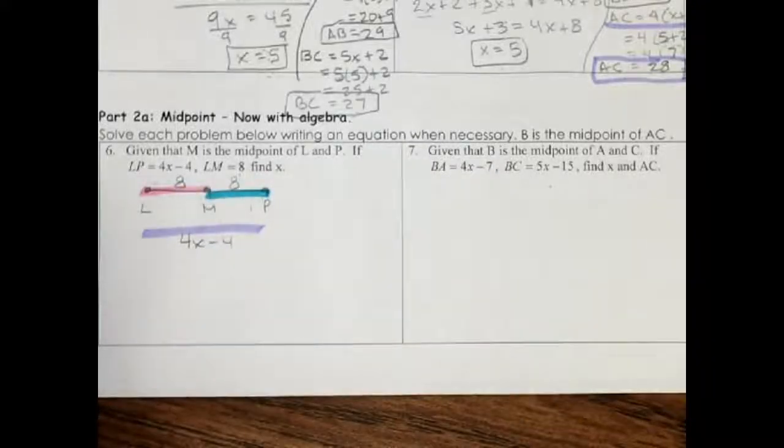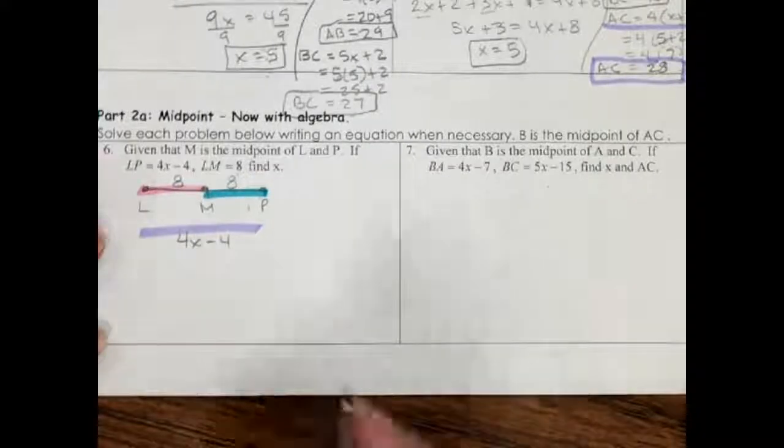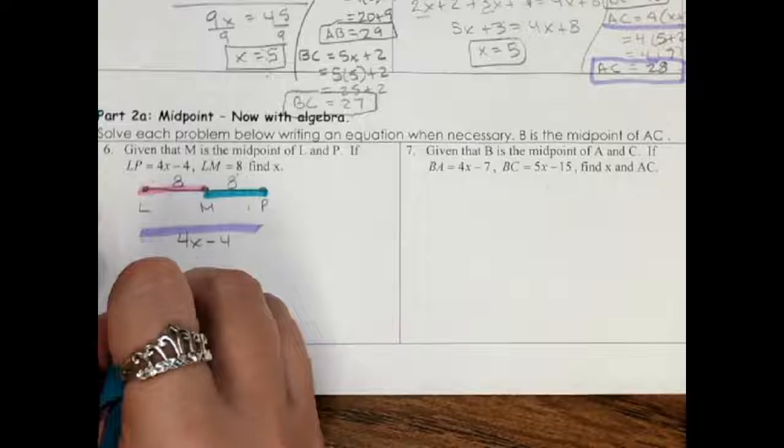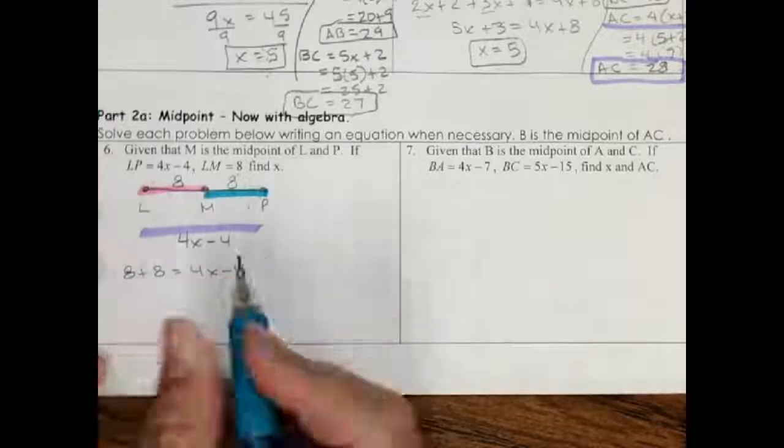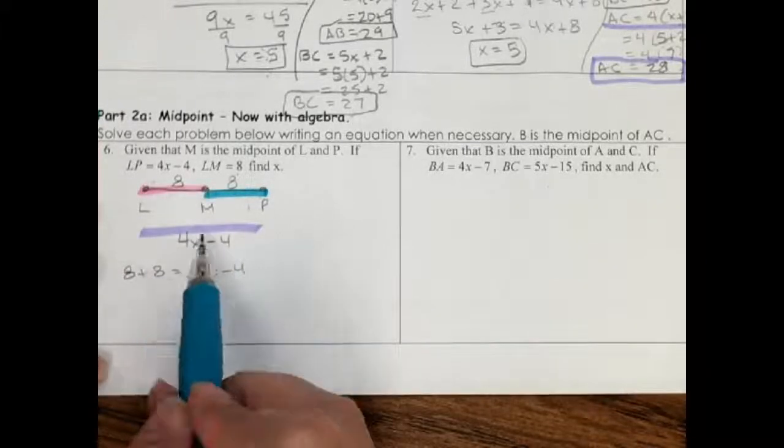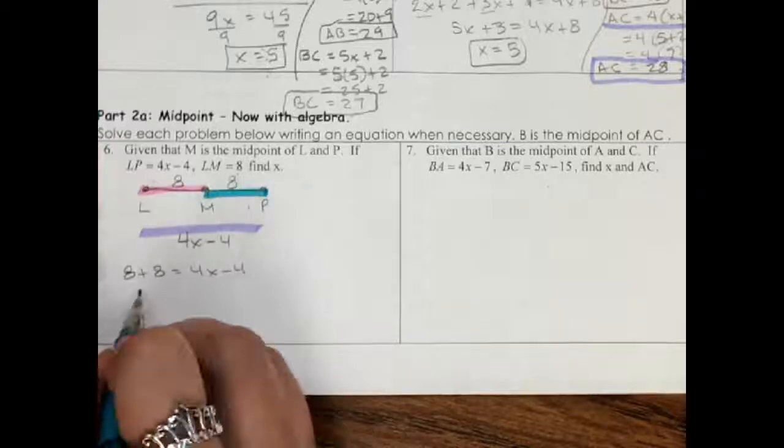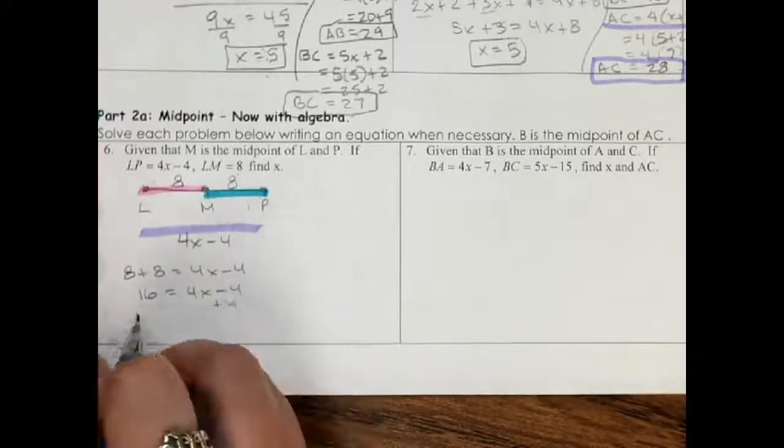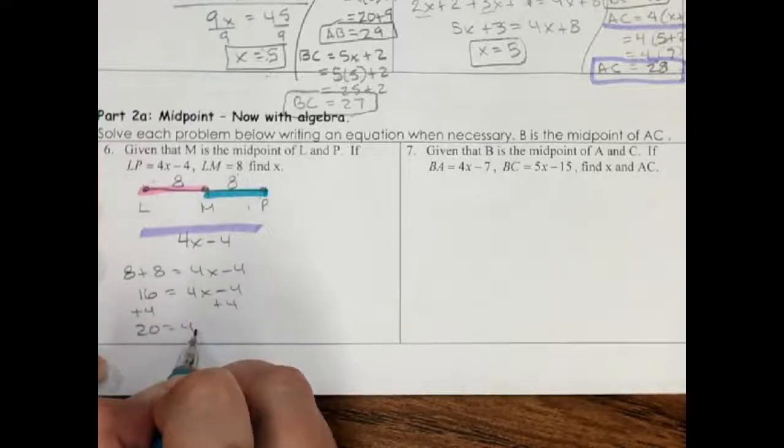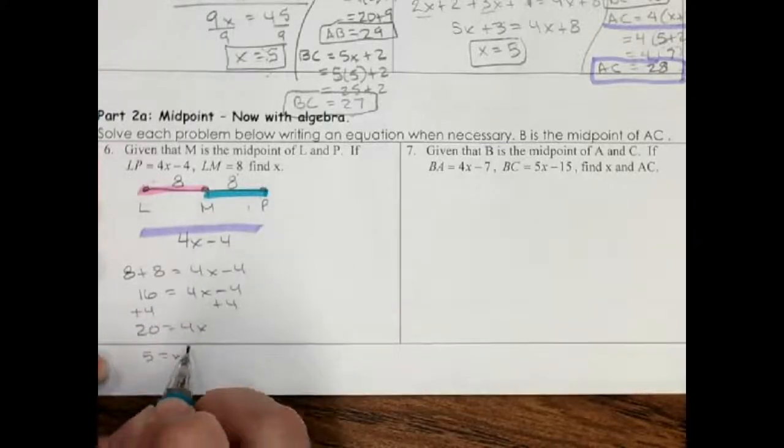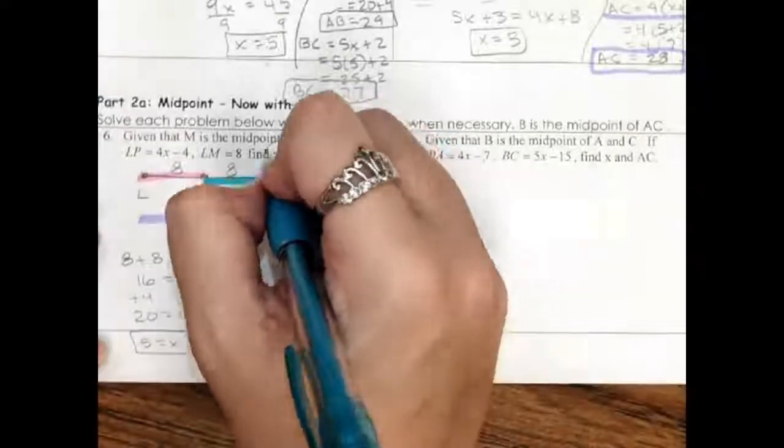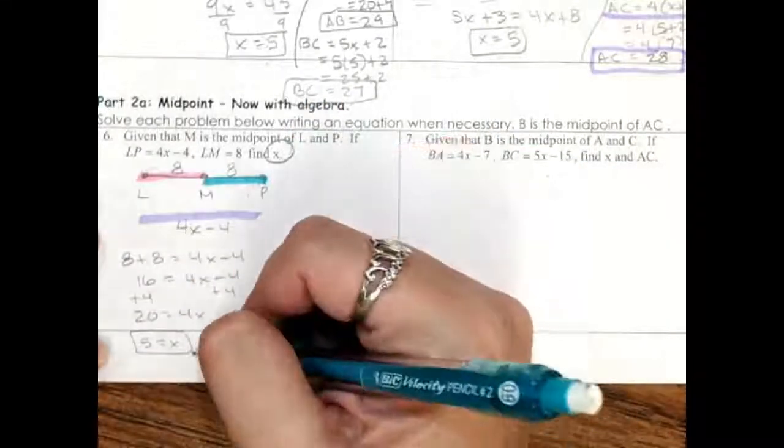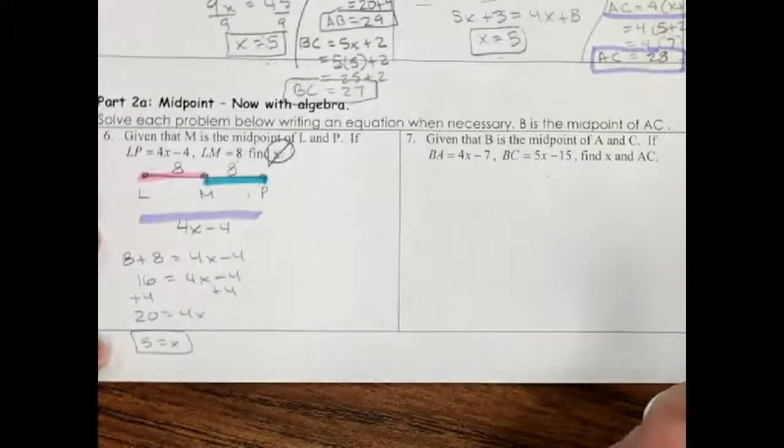This is now exactly what we did before. So I have 8 plus 8 equals 4x minus 4. Then it's just algebra. Add the 4. And all that they had asked us to do in this one was find x. I found x. There it is. And I check it off to make sure I've got everything done.